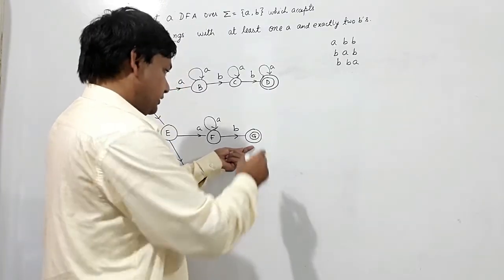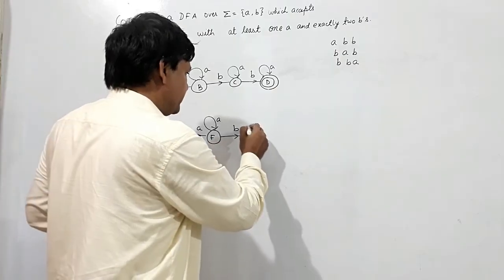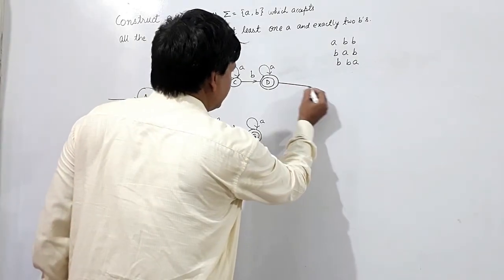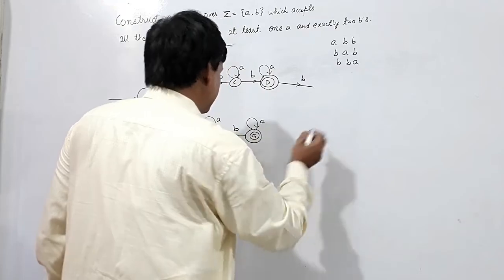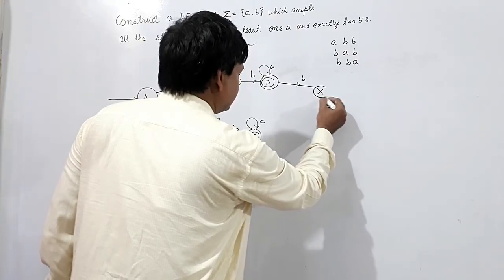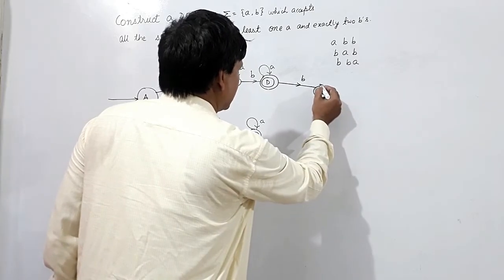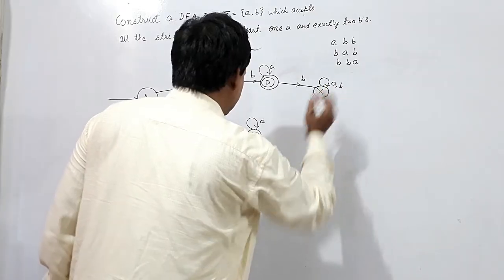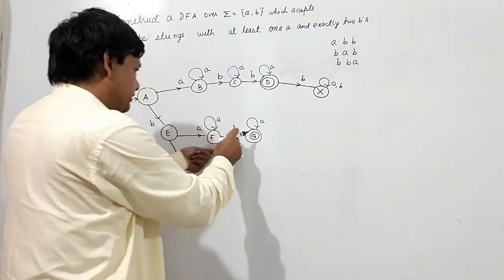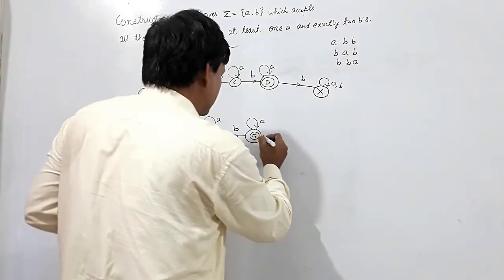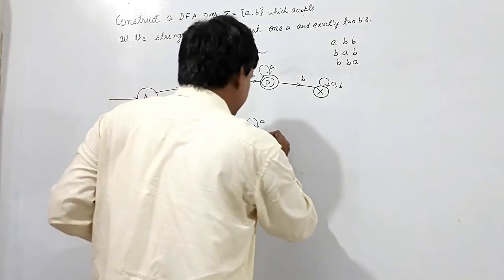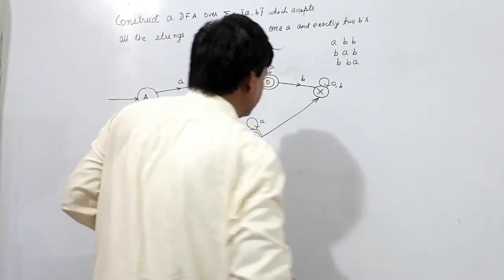If it takes A, more than one A is accepted. But if it takes B, one more B means the number of B's would exceed two, so it will be in a reject state — call it X or Y. If it takes either A or B from that reject state, it will always remain there. So B transitions that exceed two B's all go to this reject state.